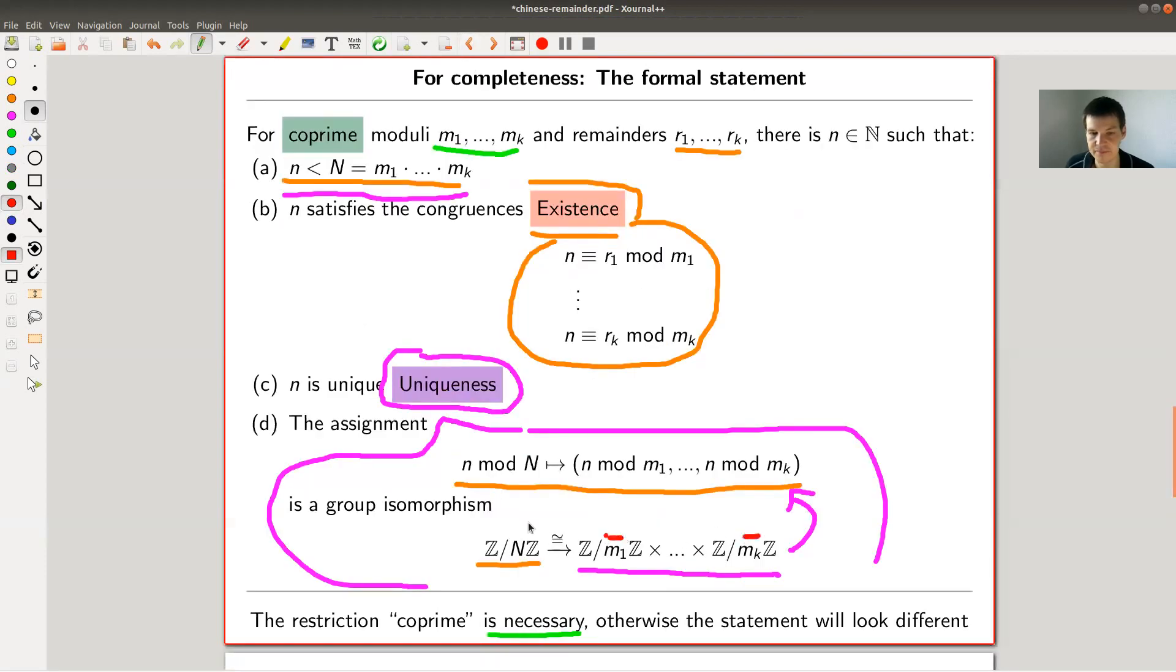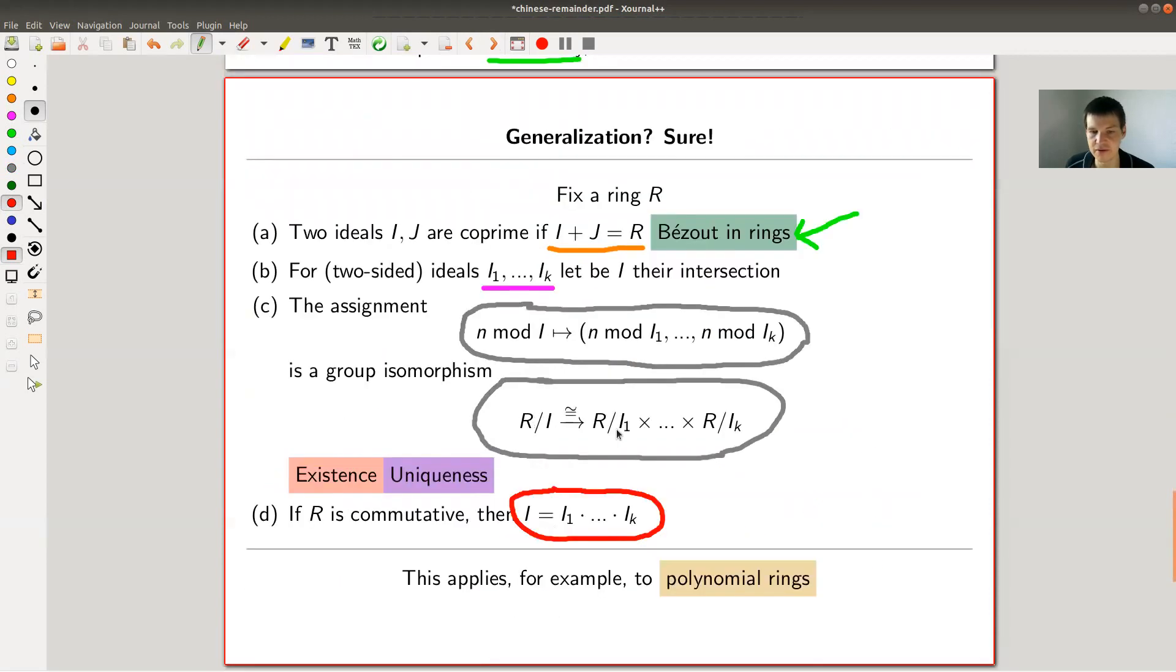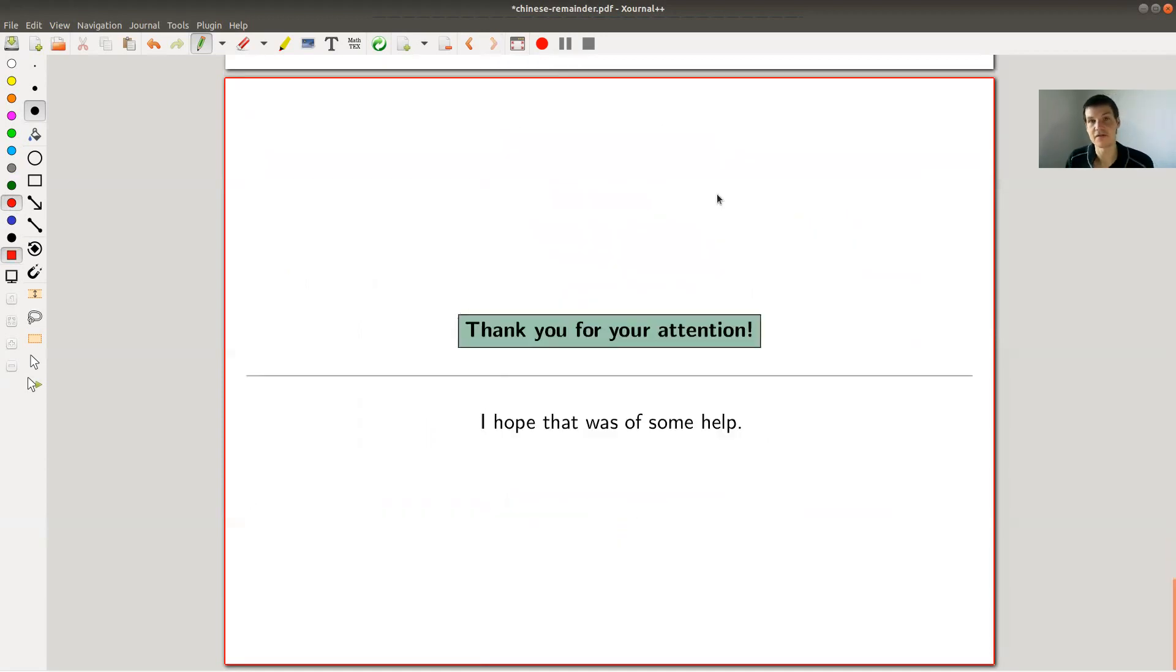This is the product of all of them and you split your ideal along the products of the ideals. And this works, for example, for polynomial rings. Yeah, but that's basically it. So Chinese remainder theorem is this nice theorem, which tells you or at least the proof tells you an explicit way how to solve system of congruences. And the theorem itself basically is how to split Z mod n into smaller components. Yeah, so I hope you enjoyed the video. And I also hope to see you next time.